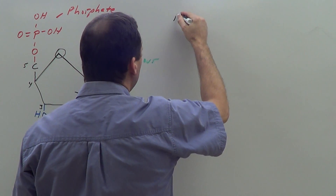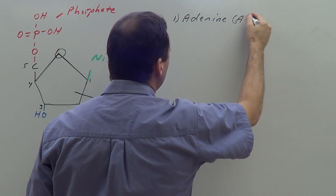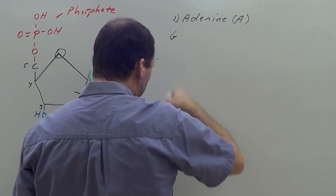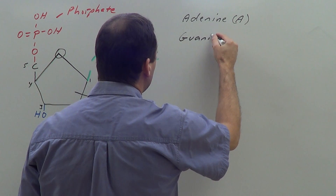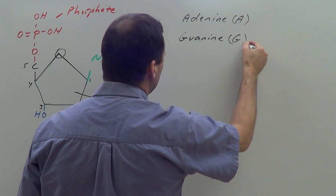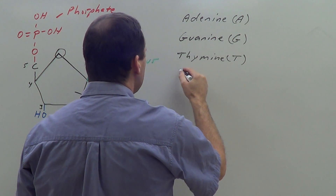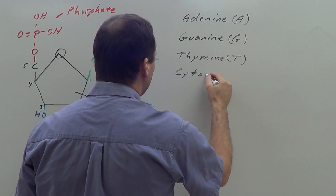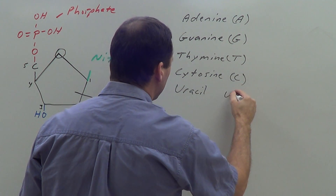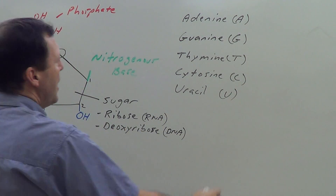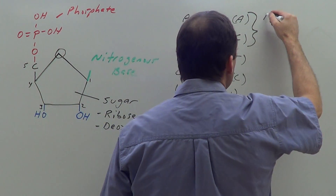The nitrogenous base comes in different forms. One form is adenine, abbreviated A. Another is guanine, abbreviated G. Then we have thymine, abbreviated T, and cytosine, abbreviated C, and uracil, abbreviated U.